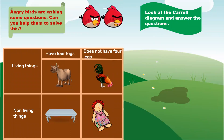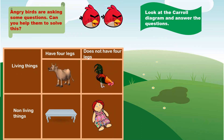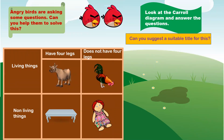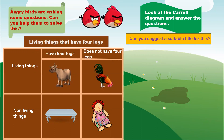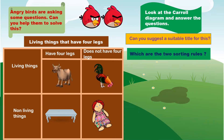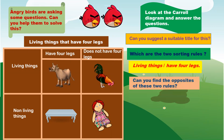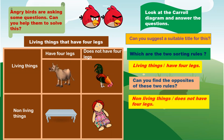Angry birds are asking some questions — can you help them to solve this? Look at the cattle diagram and answer the questions. Living things have four legs. Non-living things do not have four legs. Can you suggest a suitable title for this? Which are the two sorting rules? Can you find the opposite of these two rules? Non-living things do not have four legs.